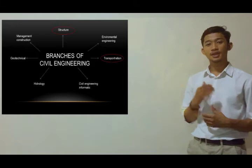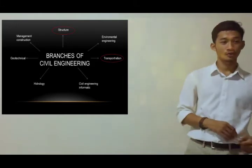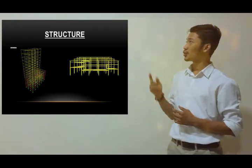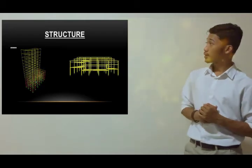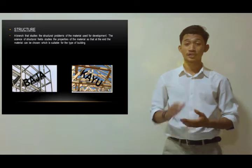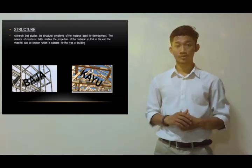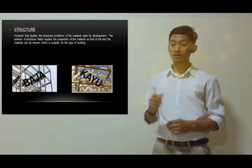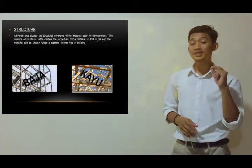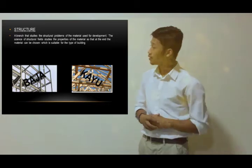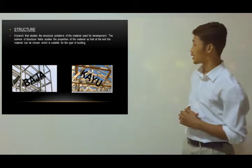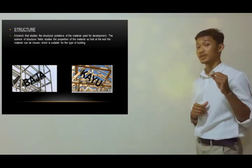First, let me explain about structure. You can see from this picture what we call structure. Structure is a branch that studies the structural problems of the material used for development. The science of structure studies the properties of materials so that at the end, the most suitable material can be chosen for the type of building — for example, steel (in Indonesian: baja) and wood (in Indonesian: kayu).